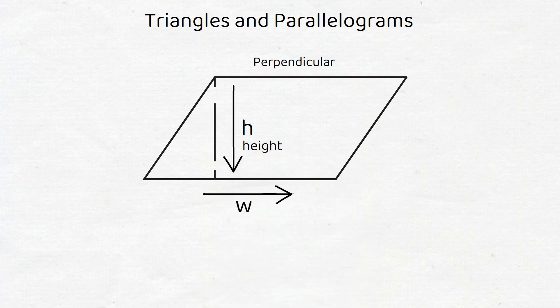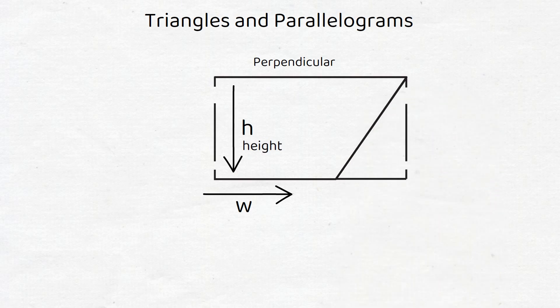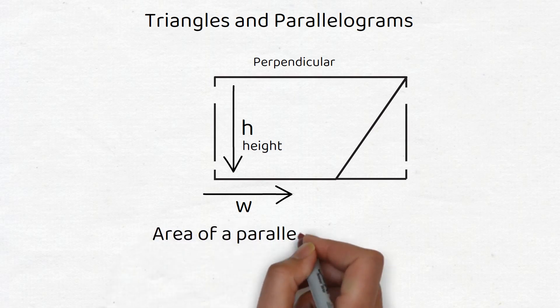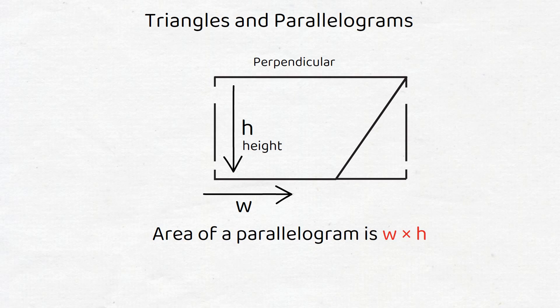To find the area of a parallelogram, we can cleverly cut away the triangular part and reconfigure it on the other side. This completes the picture of a rectangle for which we now know how to compute the area. Thus, we see that the area of a parallelogram is the width times the height, or w times h.